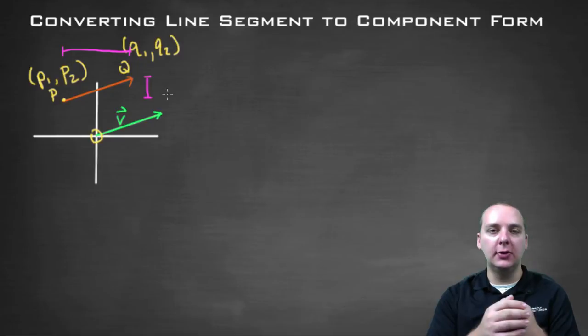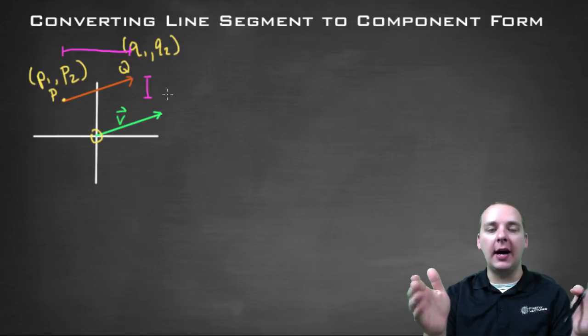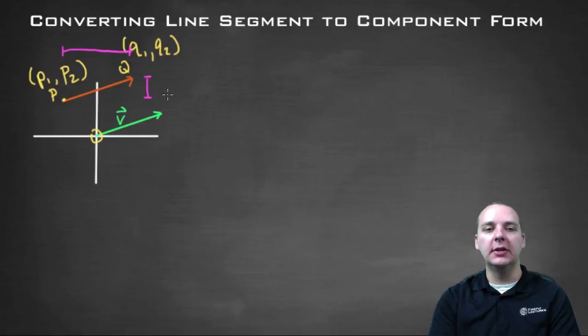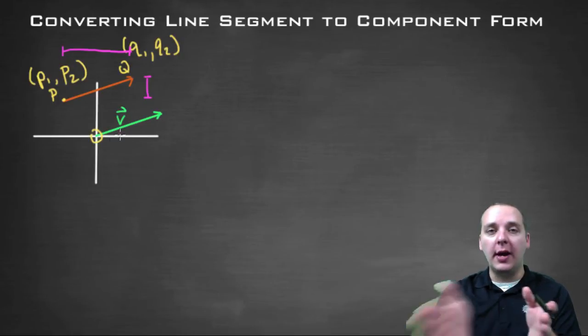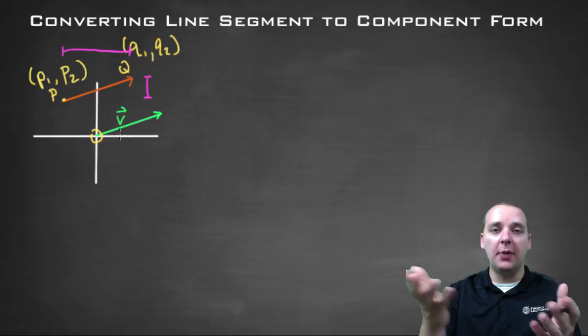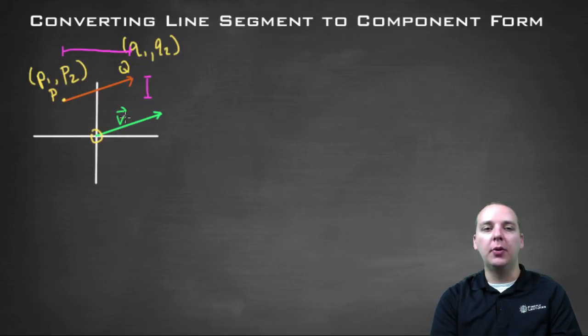Because if we had those two things, let's say the horizontal distance was five and the vertical distance was two for example, then if you start at the origin, if you went right five units and up two units, then that would be your vector in component form. So really, all we need are just these distances.